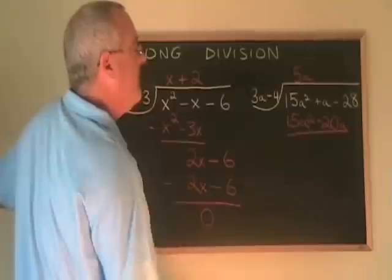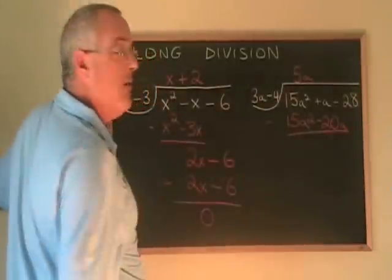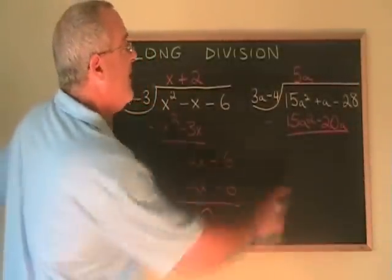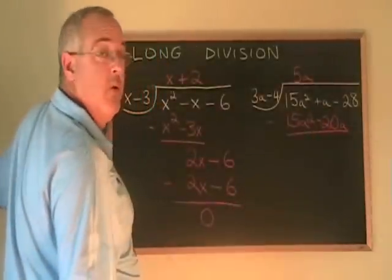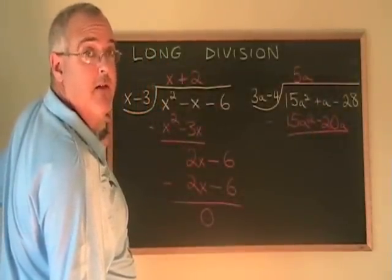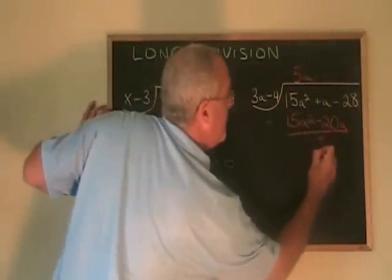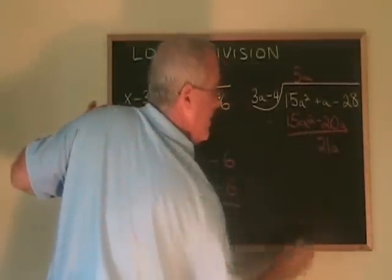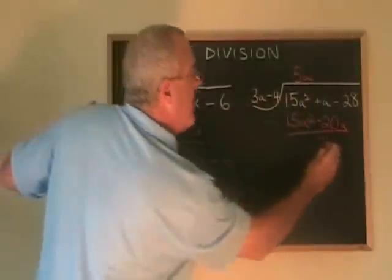And we subtract. 15a squared minus 15a squared is zero. a minus negative 20a is the same as a plus 20a. It's 21a. And the minus 28 carries down.